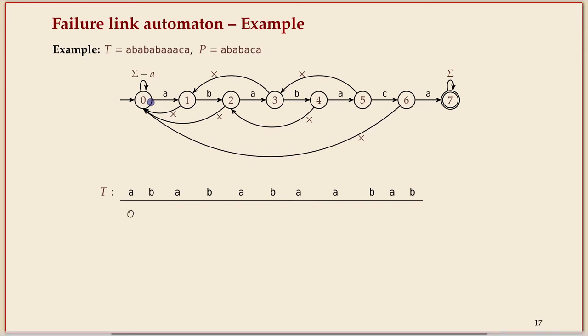Now I read an A. Sorry, I should have said I started in state zero over to the left. Now I read an A and after that I'm in state one. I read a B, I'm in state two. I read an A, I'm in state three. So far so good. And another B. That brings me to state four. And an A and I'm happy in state five.